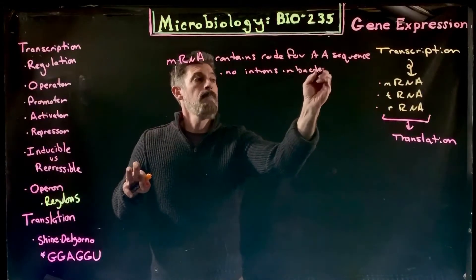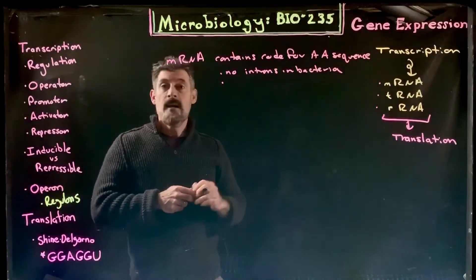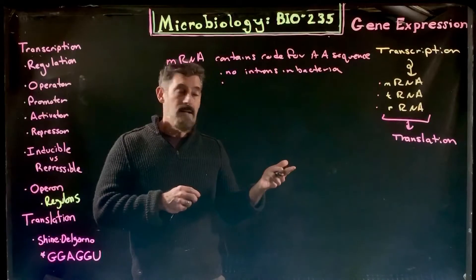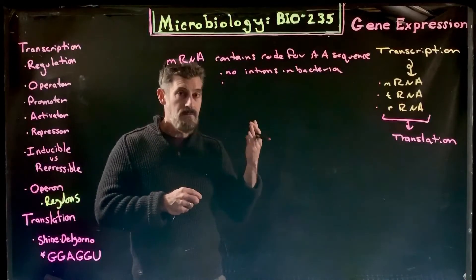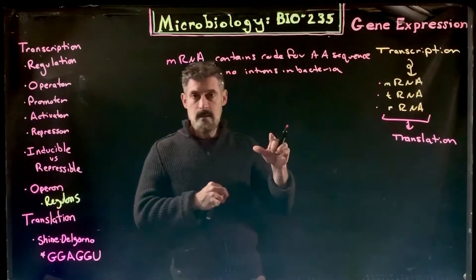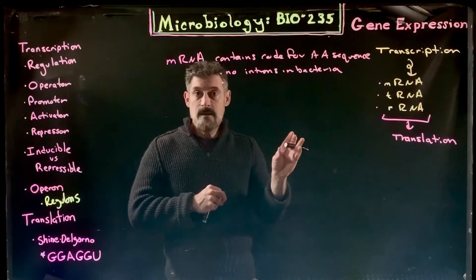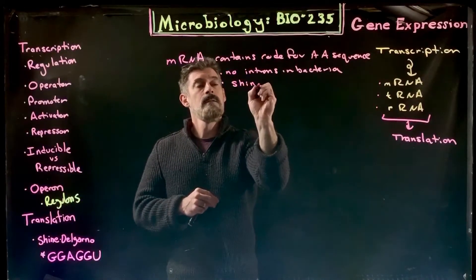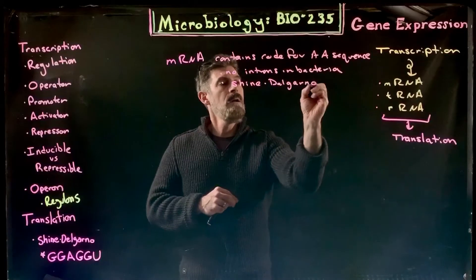The other two things that typically happen to eukaryotic messenger RNA are the addition of a 5' cap and a poly-A tail. The 5' cap doesn't happen here in bacteria. It's a very important part for eukaryotic cells and will come into play later with viral infections. Instead, bacteria have something called a Shine-Delgarno sequence.